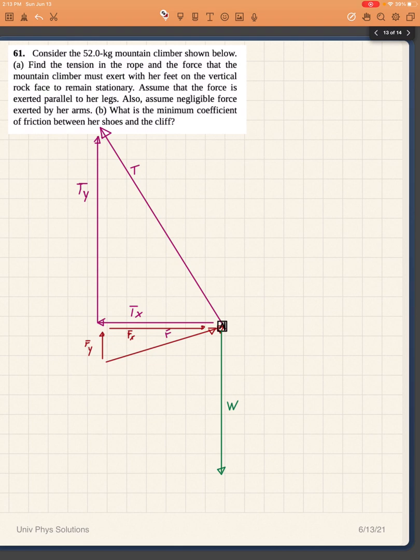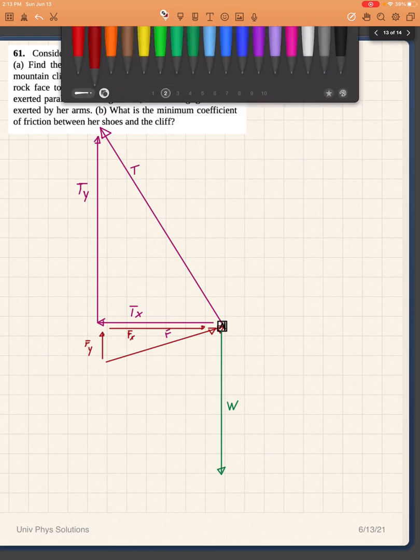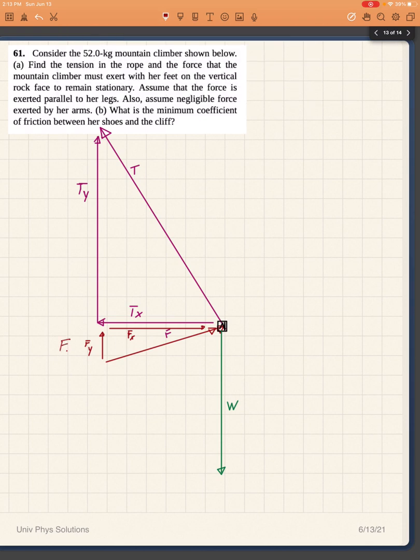For the force we can do something similar. This one will have a component going up and a component along the x direction. My weight is all in the y direction. Now I can identify that the force of friction of the shoes of the climber on the rock face will have to be what's providing me my Fy. So this is going to be equal to the force of friction, which we are asked to basically find on part b in order to find the coefficient of friction.